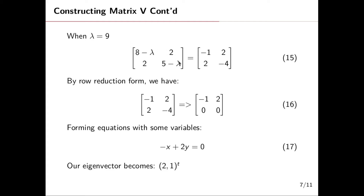We are familiar with this equation from when we were finding the determinant of the matrix. To find our V, first we consider the case where lambda is equal to nine. When lambda equals nine, we get this two-by-two matrix, and we perform row reduction to give us equation 16.